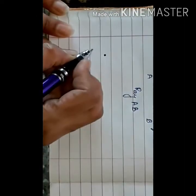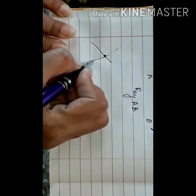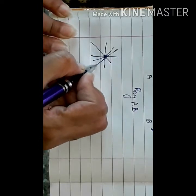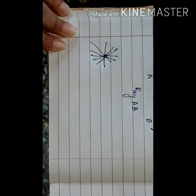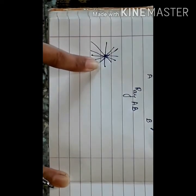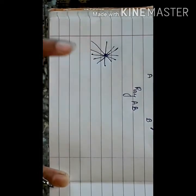An infinite number of lines can be drawn from a point. Infinite means countless lines from this point. This point is known as the point of congruence. When a number of lines are drawn from a point, those points are said to be the point of congruence.